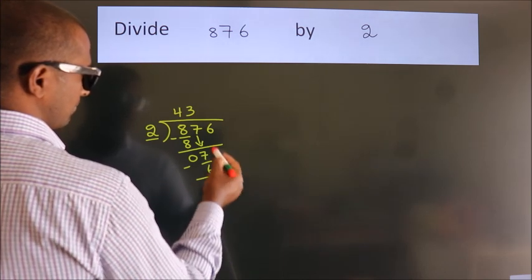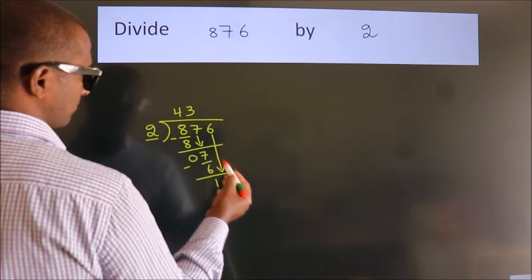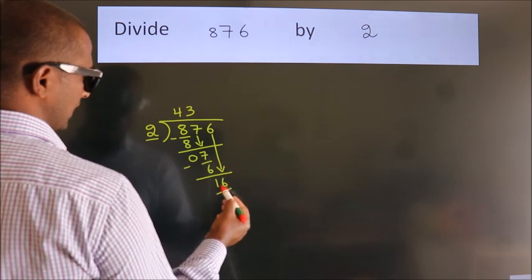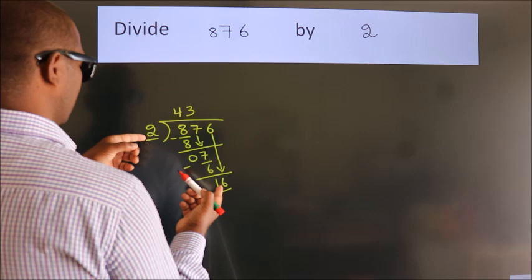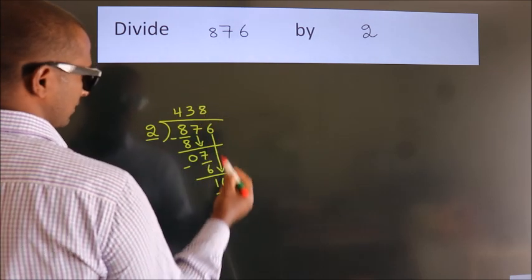After this, bring down the next number. So 6 down, so 16. When do we get 16 in the 2 table? 2 eights, 16.